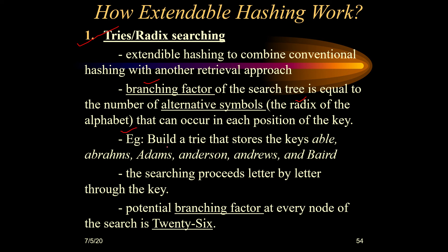We are building a tree for the keywords: Abel, Abraham, Adams, Andresen, Andrew, and Bate. Whenever we create a trie, we process the keywords letter by letter. Since alphabets are considered, and there are 26 alphabets, every node has a possibility to create up to 26 child nodes. This is how the trie is created.